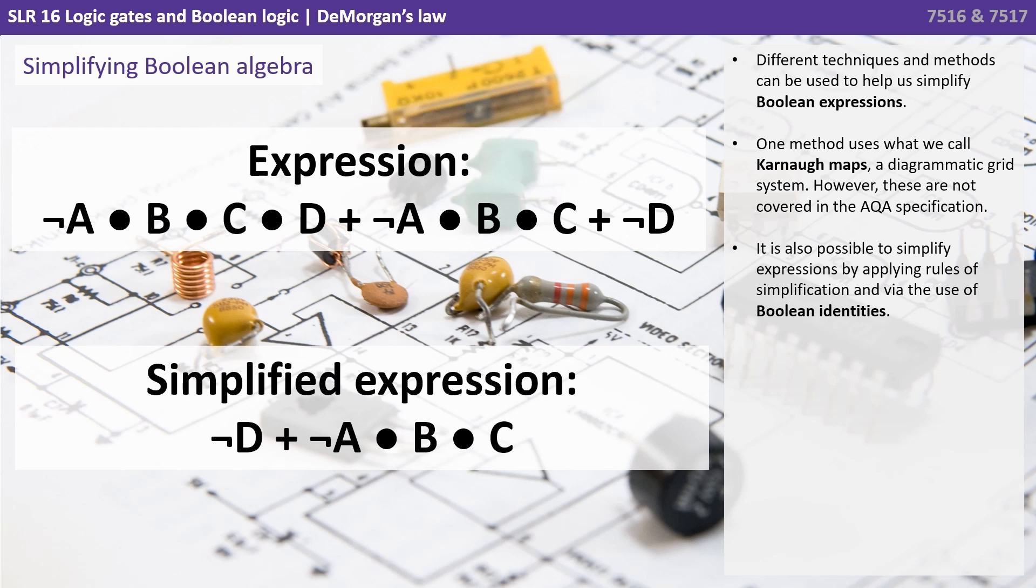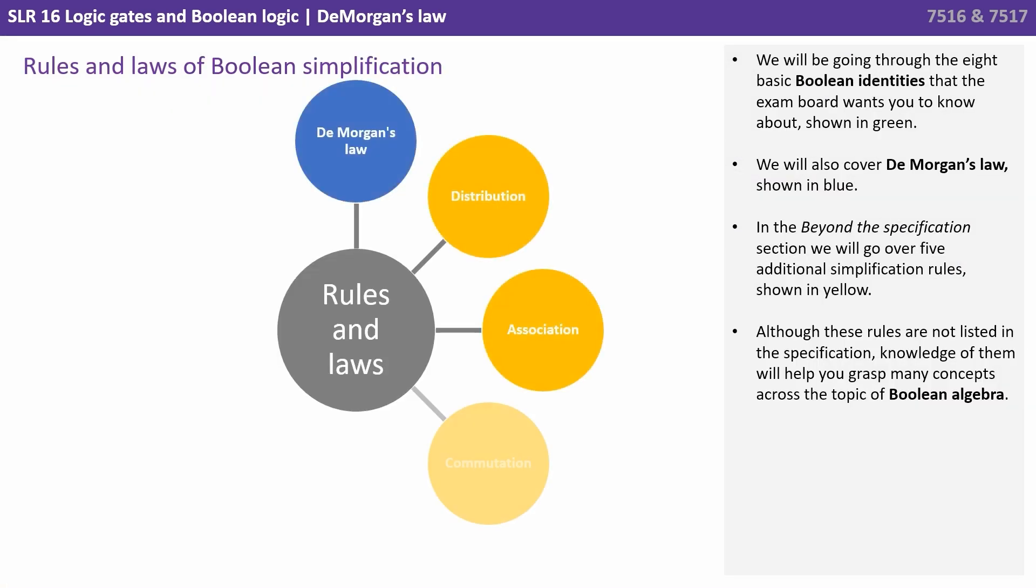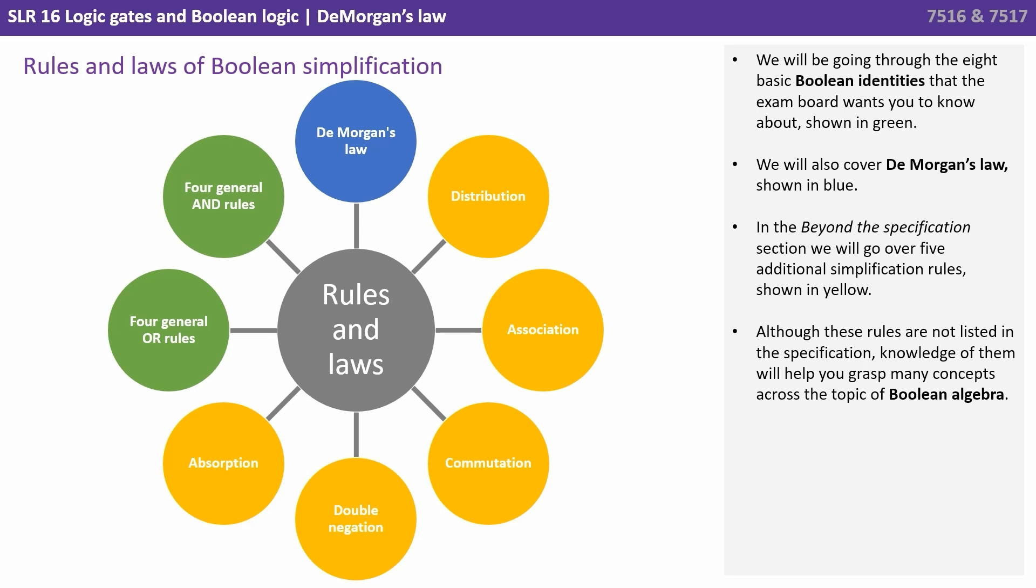It's also possible to simplify expressions by applying rules of simplification and via the use of Boolean identities. We'll be going through the eight basic Boolean identities that the exam board wants you to know about, shown in green. We'll also cover DeMorgan's Law, shown in blue. In the beyond the specification section, we'll go over five additional simplification rules shown in yellow. Although these rules are not listed in the specification, knowledge of them will help you grasp many concepts across the topic of Boolean algebra.